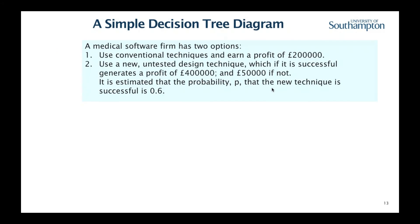Let's look at an example a company might be faced with. That company — a medical software company — has two options to fulfill some contract. They can use the techniques they've always used, the conventional techniques. They're pretty sure, based on experience, they will make a profit of 200,000 pounds. The other option is they could use an untested design technique. If it was successful, they would make twice the profit — 400,000 pounds. But if it wasn't successful, if they spent much more time on it and had to fix lots of problems, the outcome would only be 50,000.